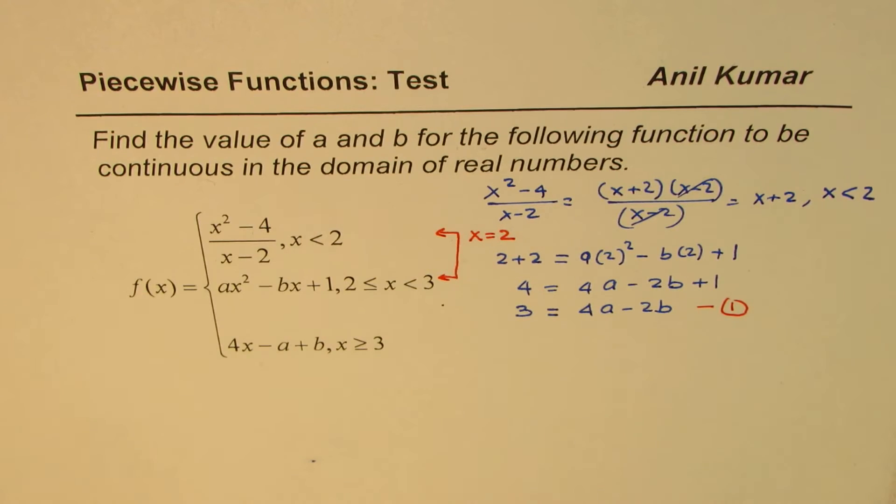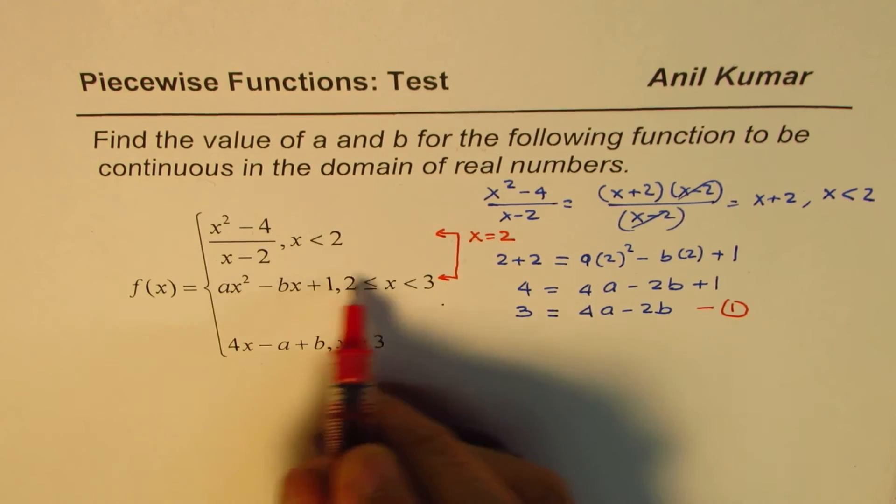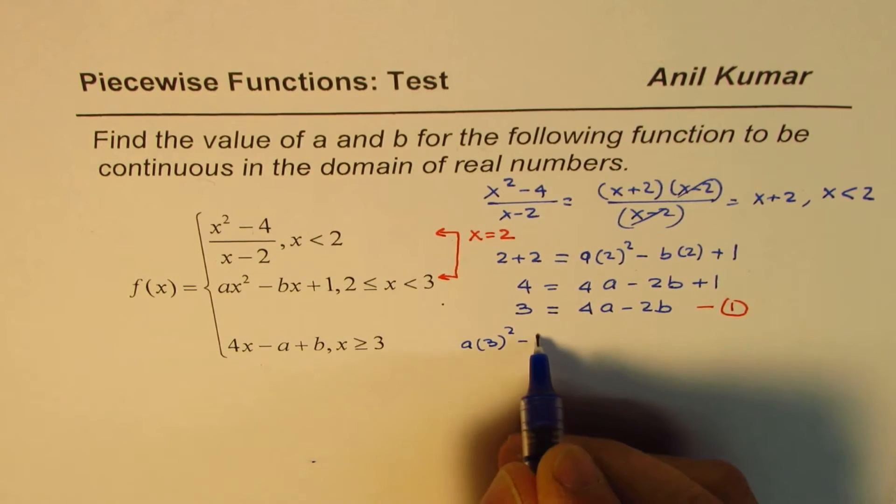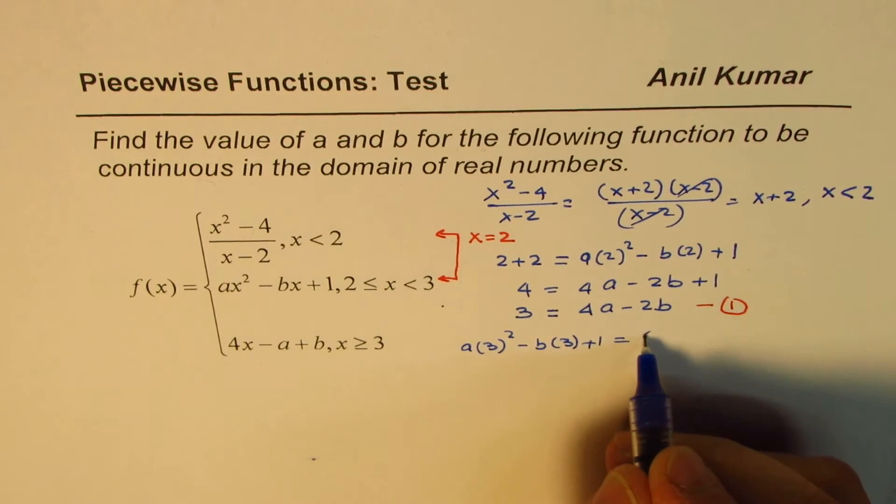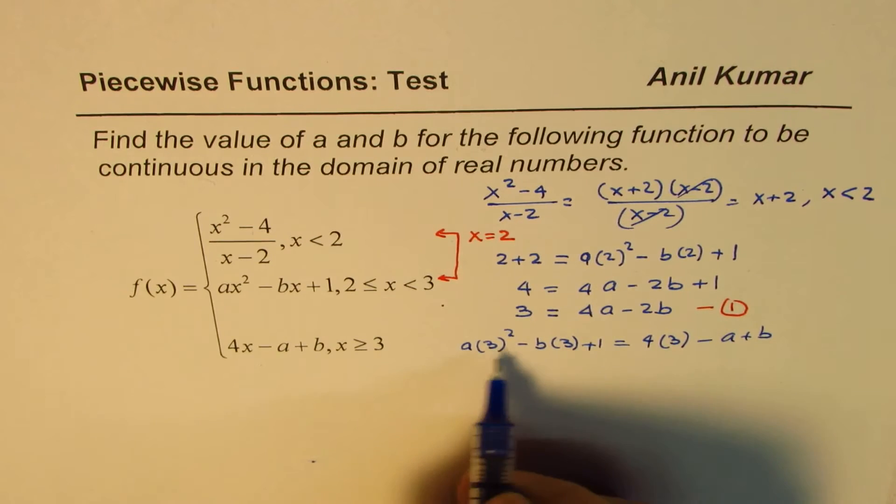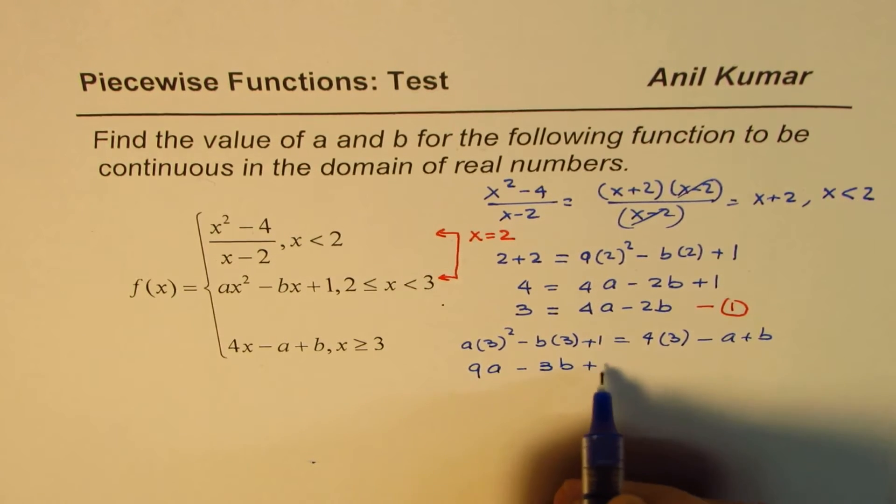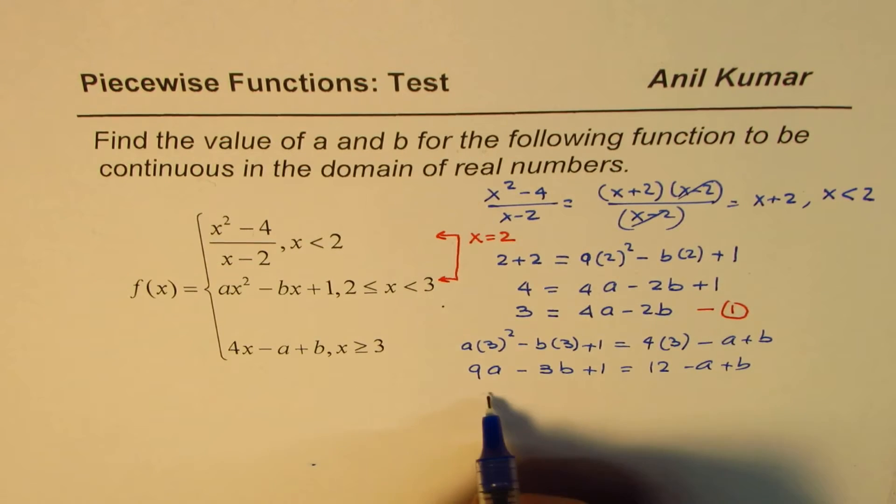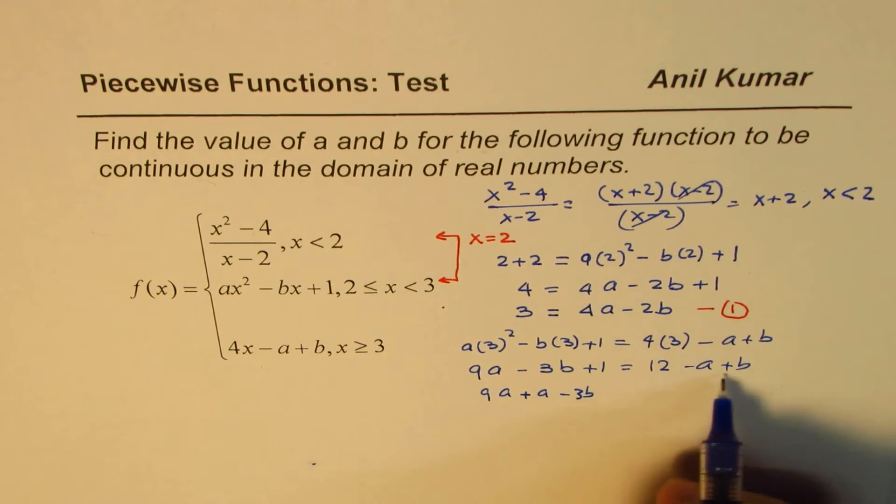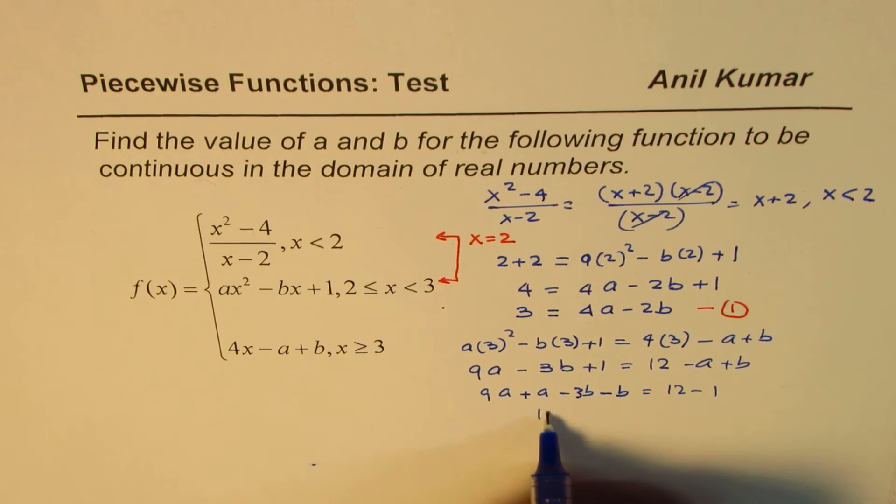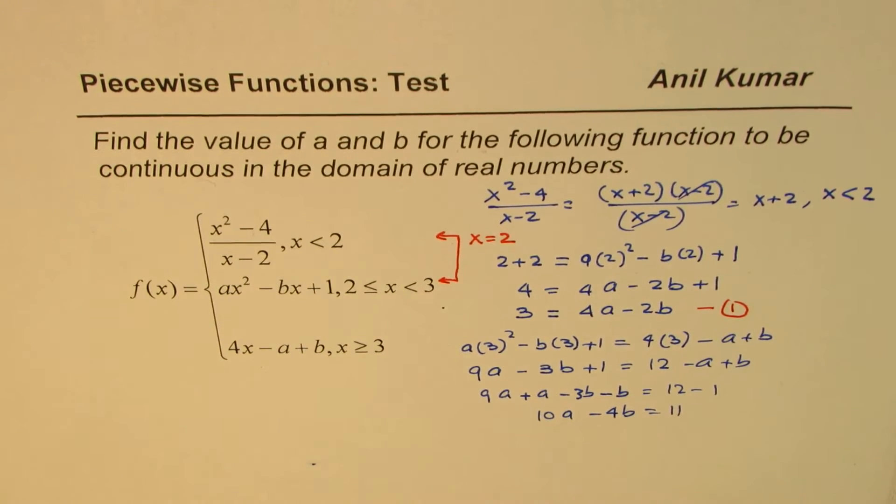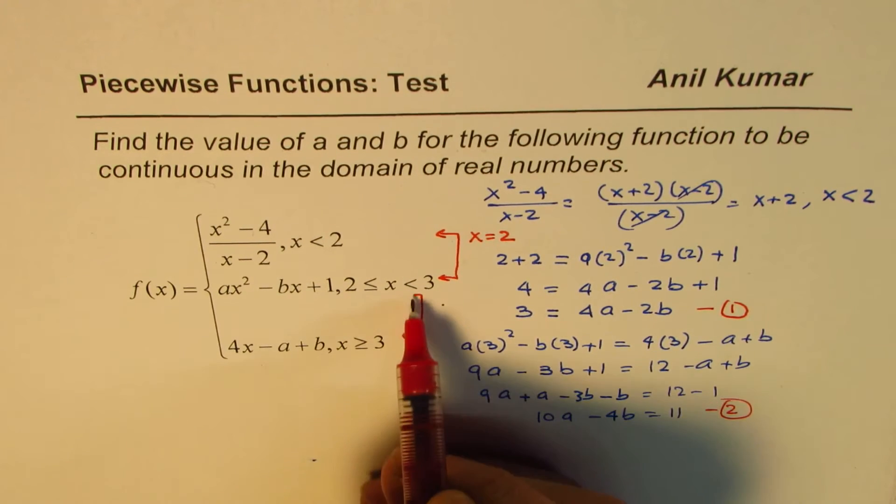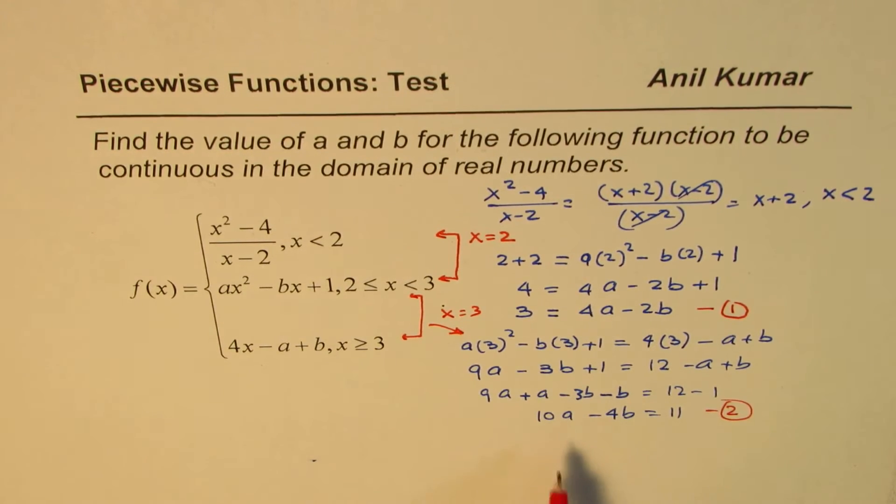Now, we can get the other equation from the other two equations. We can take x equals to 3 and equate these two. So when you do 3, you get a times 3 square minus b times 3 plus 1 should be equals to 4 times 3 minus a plus b. Now, that gives you 9a minus 3b plus 1 equals 12 minus a plus b. Bringing a's and b's together on the left side, this gives you 9a plus a minus 3b minus b equals 12 minus 1, or 10a minus 4b equals 11. So that becomes our equation number 2. So this one we got from these two, for x equals to 3.